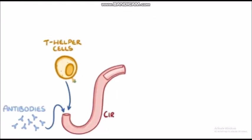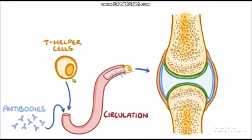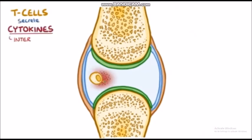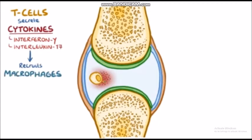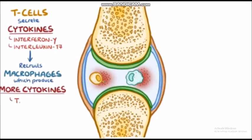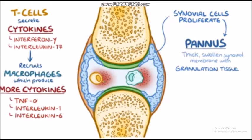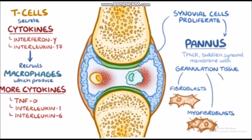In rheumatoid arthritis, T helper cells and antibodies enter the circulation and reach the joints. Once there, T cells secrete cytokines like interferon gamma and interleukin-17 to recruit more inflammatory cells like macrophages into the joint space. Macrophages also produce inflammatory cytokines like tumor necrosis factor or TNF-alpha, interleukin-1 and interleukin-6, which together with T cell cytokines stimulate synovial cells to proliferate. The increase in synovial cells and immune cells creates a pannus, which is a thick, swollen synovial membrane with granulation or scar tissue made up of fibroblasts, myofibroblasts, and inflammatory cells.